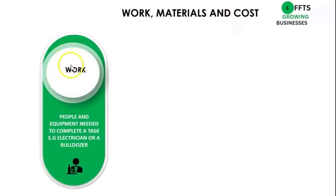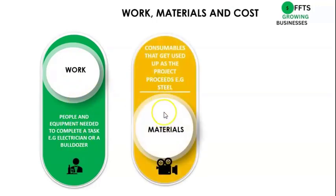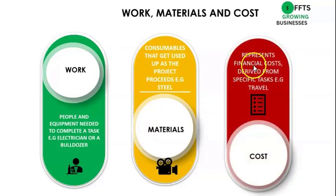So we are going to be looking at work — people and equipment needed to complete a task. So electrician and bulldozer are work resources. Materials are consumables that get used up as the project proceeds, for example, steel. Costs represent financial costs derived from specific tasks, for example, travel.